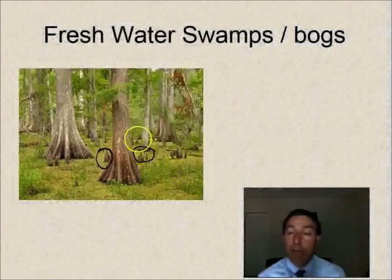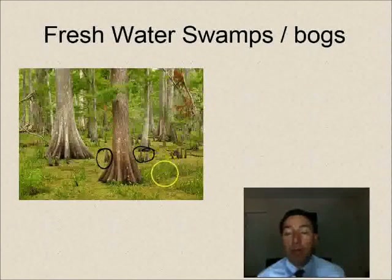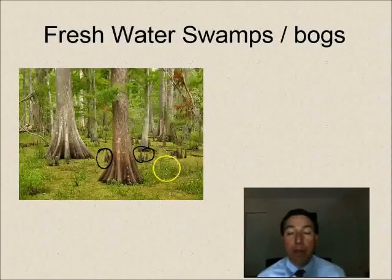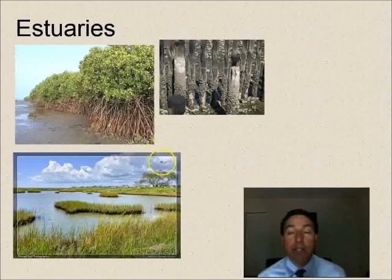Bogs don't have trees but do have all kinds of mosses, and they're quite wet all the time. These mosses decay over time creating peat areas.